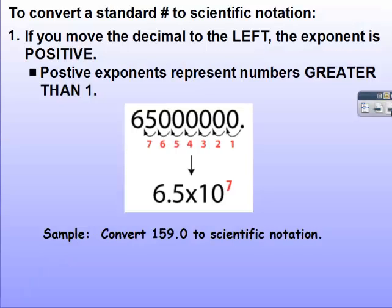To convert a number to scientific notation, if it's a very large number, we move the decimal to the left. So here's our decimal. We want it between the 6 and the 5. So we move it over 7 spots. So that would be 6.5 times 10 to the 7th. Again, if you see a positive exponent, that means that the number was very large or greater than 1.